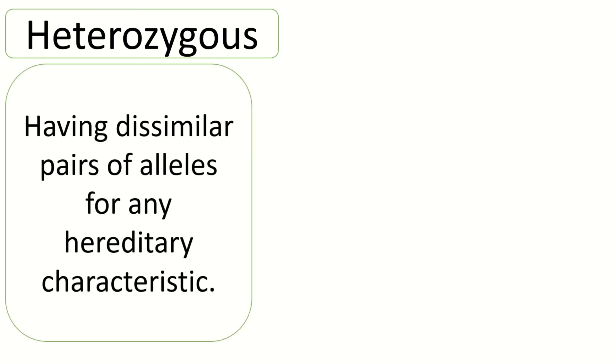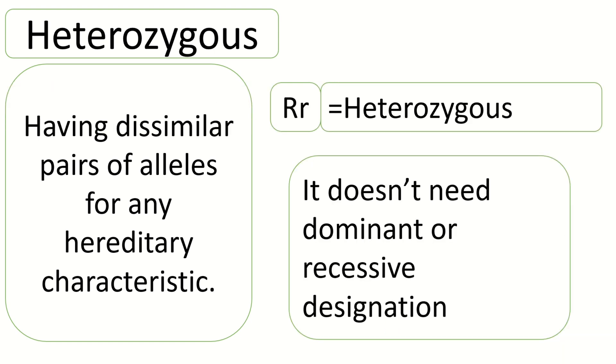Heterozygous. Having dissimilar pairs of alleles for any hereditary characteristic. In heterozygous, the pair of alleles are not the same. Big R and small r is heterozygous. It doesn't need dominant or recessive designation because the pair of alleles are not similar.